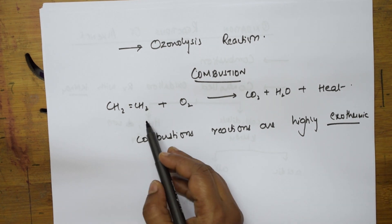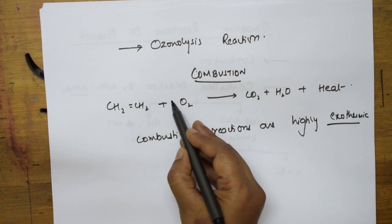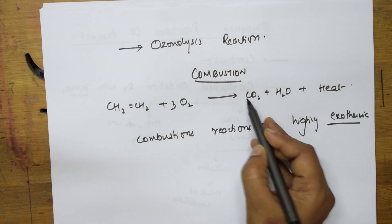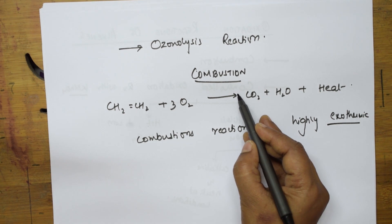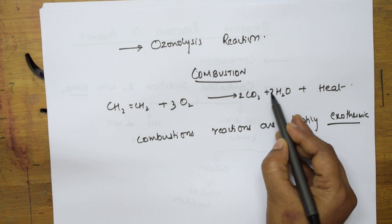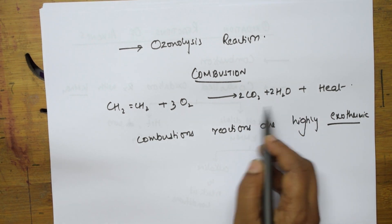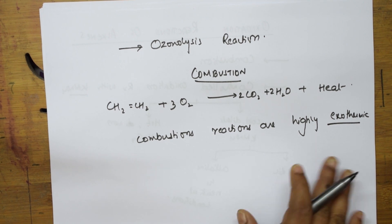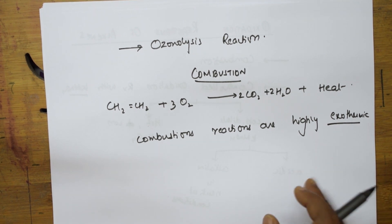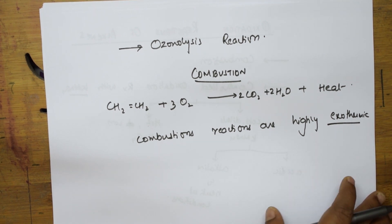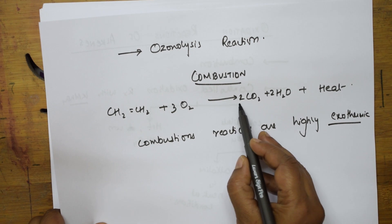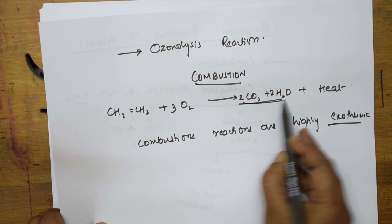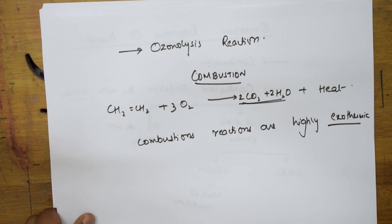Let us balance this combustion reaction. This becomes 3 oxygen molecules, then this becomes 2 CO2 and this becomes 2 H2O. This is balanced. This is your combustion reaction which is highly exothermic. Please remember: combustion products are always carbon dioxide and water, irrespective of the hydrocarbon taken.